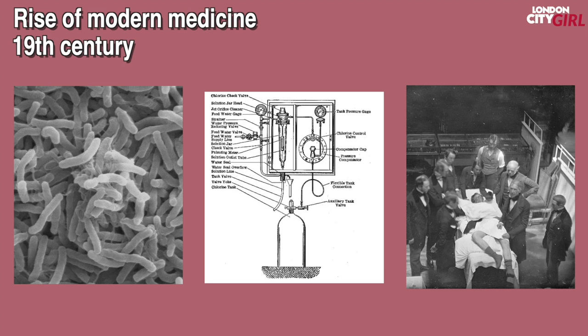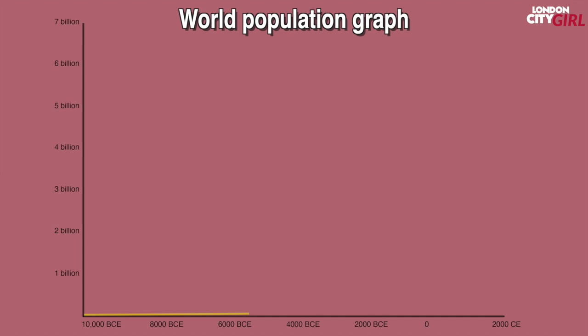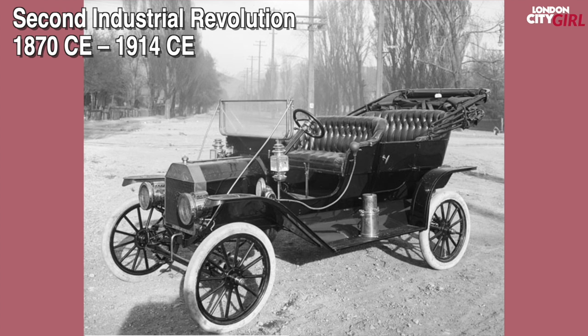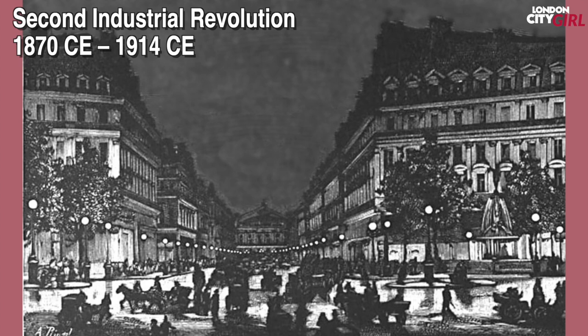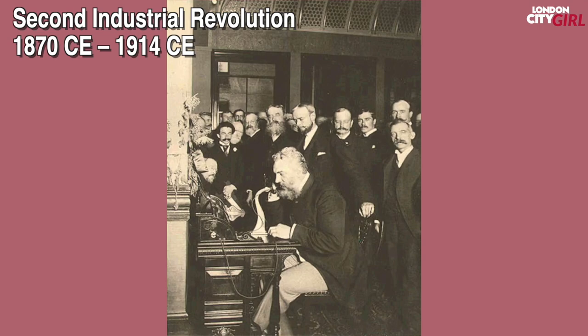This alongside the industrial revolution and increased agricultural productivity meant that the human population exploded. Around 1800 CE there were only one billion people in the world and two centuries later the world's population had increased more than seven-fold to over seven billion people. Between 1870 CE to 1914 CE the second industrial revolution took place, also known as the technological revolution. It saw the widespread adoption of pre-existing technological systems such as electrical power as well as new technological systems such as telephones.